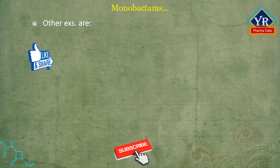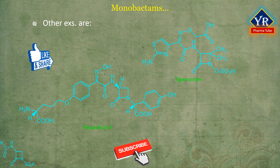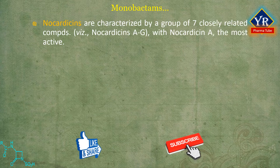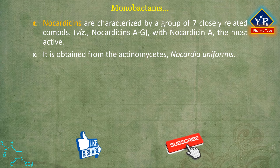Other examples of monobactams are tigemonam, nocardicins — in particular nocardicin A — and tabtoxin. Tabtoxin is produced by Pseudomonas syringae and is the precursor to the antibiotic tabtoxin beta-lactam. Nocardicins are characterized by a group of seven closely related compounds: nocardicins A, B, C, D, up to G, with nocardicin A the most active compound. Nocardicin A is obtained from the fermentation broth of a strain of actinomycetes, Nocardia uniformis.